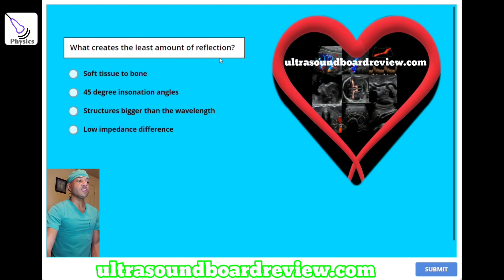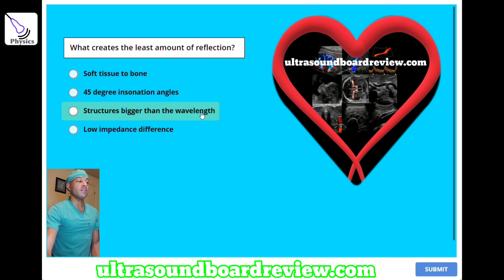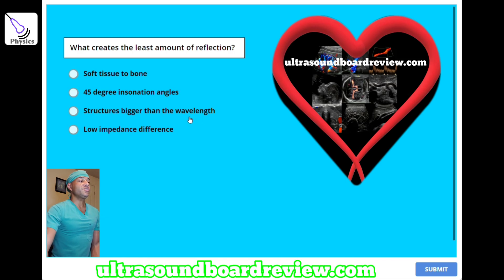What creates the least amount of reflection? A, soft tissue to bone; B, 45-degree intonation angles; C, structures bigger than the wavelength; or D, low impedance difference. The answer is D, low impedance difference.